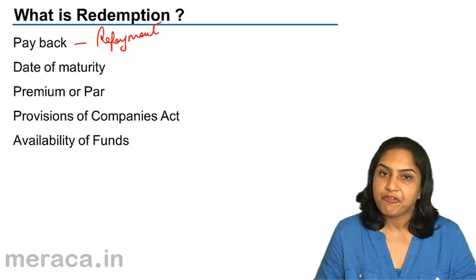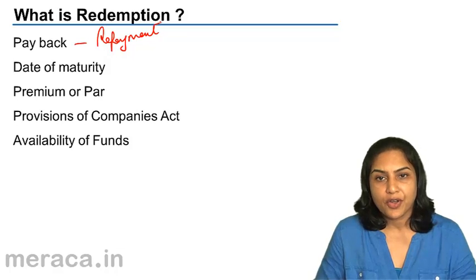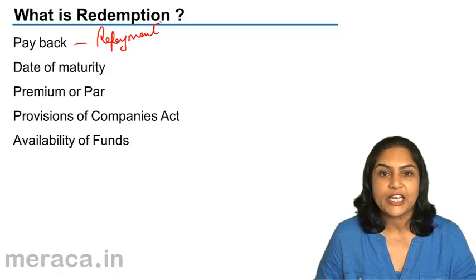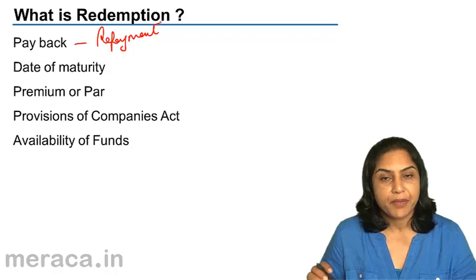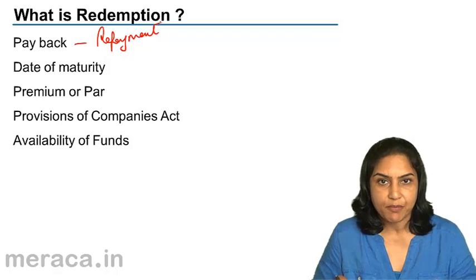When preference shares are issued, normally they are for a certain period of time, and the date of maturity is determined at the time of issue itself.